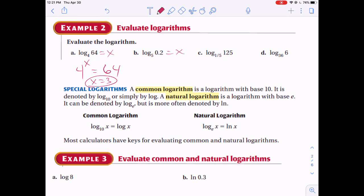Next one, we'll do all of these. So base 5 to what power equals 0.2? Now this is a decimal. Well, 0.2 can also be written as 1 fifth. So let me just write that for you here, 1 over 5, and that should make it a lot easier to see.